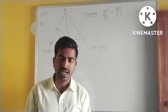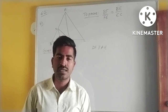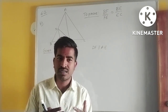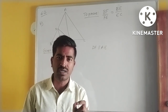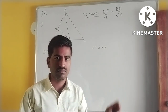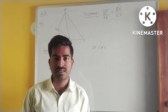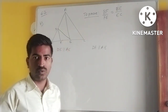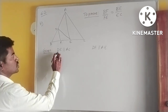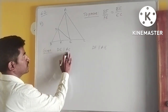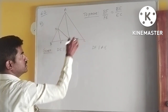Whenever a combination of triangles is given, particularly in this exercise, you need to draw the separated triangles. That is the very important key to solve 'prove that' questions in this exercise. So let us see how to draw the separated triangles. Based on the given data, DE is parallel to AC.